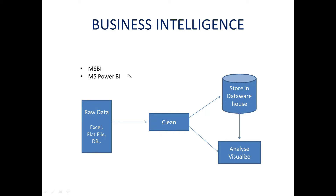In traditional BI, raw data is cleaned and stored into SQL Server or a virtual database. In Power BI, raw data can come from Excel files, databases, flat files, APIs, or even live data. Power BI takes the raw data, cleans it, and analyzes it directly — rather than just storing it. Alternatively, Power BI can pull data directly from a data warehouse such as SQL Server or Azure database and visualize it for the client.